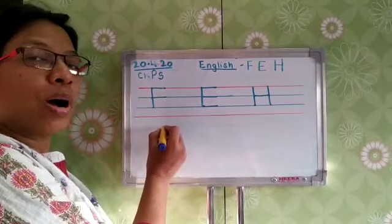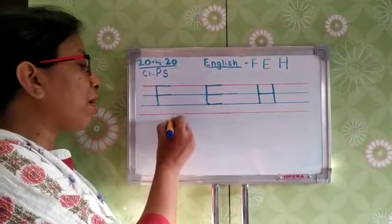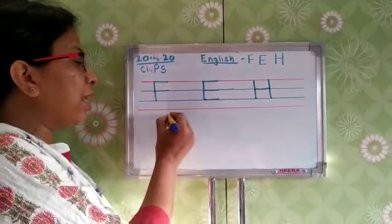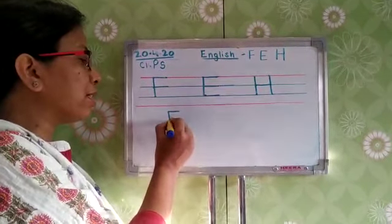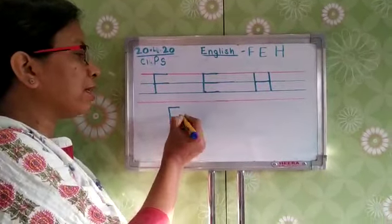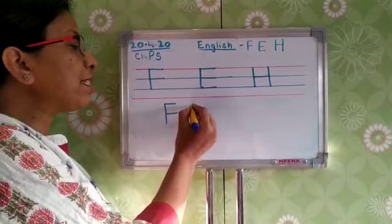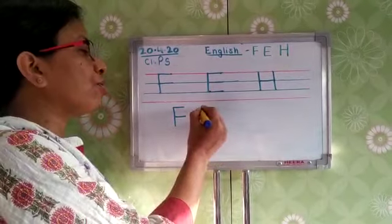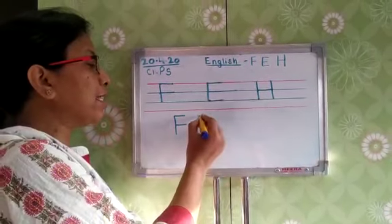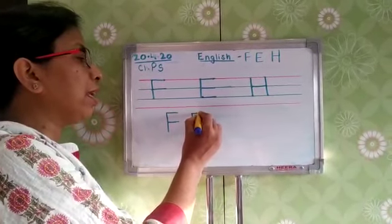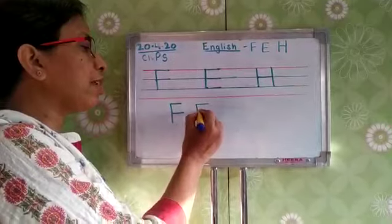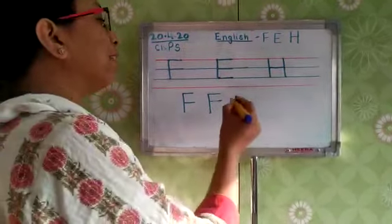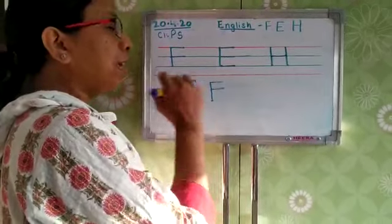For letter F, we make one standing line up to down and two sleeping lines left to right. What you will do is put dots and ask the child to join the line — the sleeping line — and then dots here like this, and they will join the line. This is letter F.